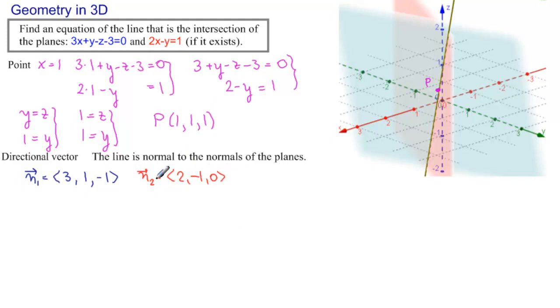Now how do we find a directional vector that's normal to these two vectors? Well, we take their vector product. So the directional vector we're looking for, our P, is going to be the vector product of N1 and N2.